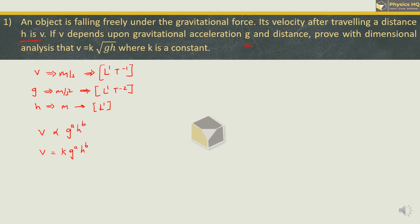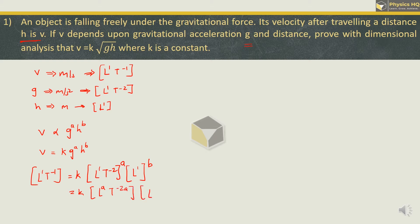Our job here is to find the values of a and b. If we remove the proportionality sign we have the constant k, g raised to a, h raised to b. Now we will put all the dimensions into this equation. So we have for velocity: L¹T⁻¹. This is equal to k; for g we put L¹T⁻², and for h we put L¹. Now g's power is a and h's power is b. Multiplying through, we get L^a · T^(−2a) and L^b. Combining the L terms we get L^(a+b) and T^(−2a).